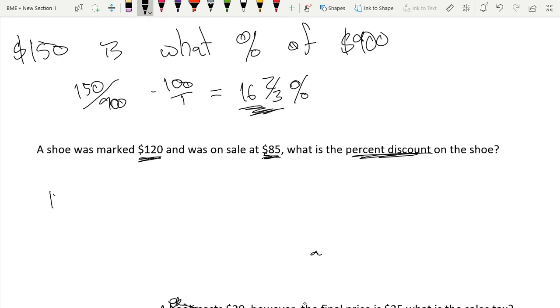We're going to use our same way: 120 times x. Our percent discount is just 1 minus x equals 85. Let me keep this color coded.